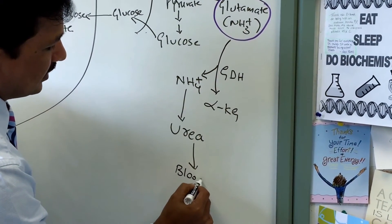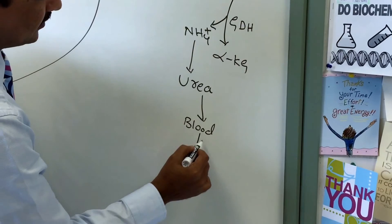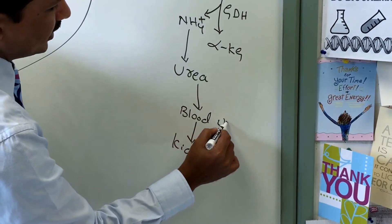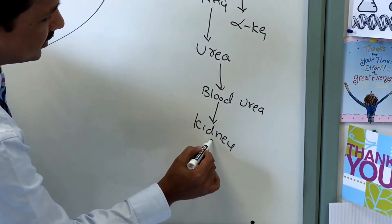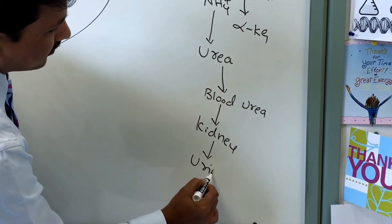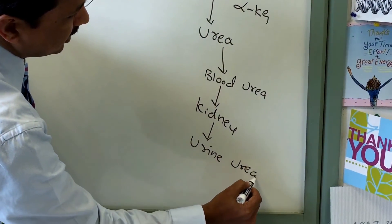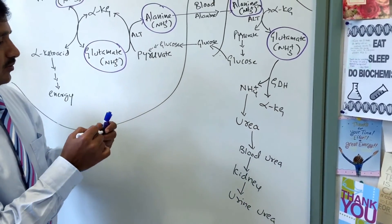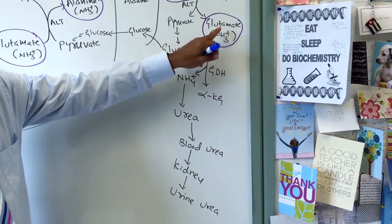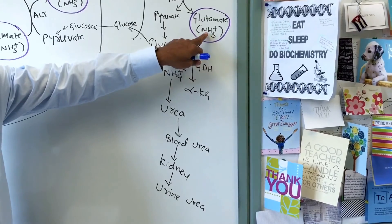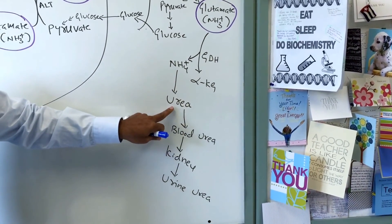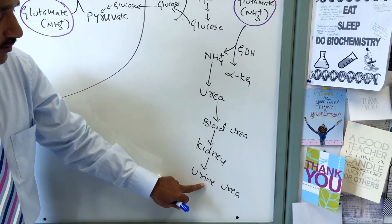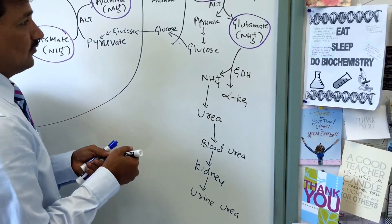The ammonium ion enters the urea cycle, and urea is synthesized and secreted into the blood. The kidney filters blood urea into urine. This is one fate of glutamate — the amino nitrogen is excreted as urea in the urine.